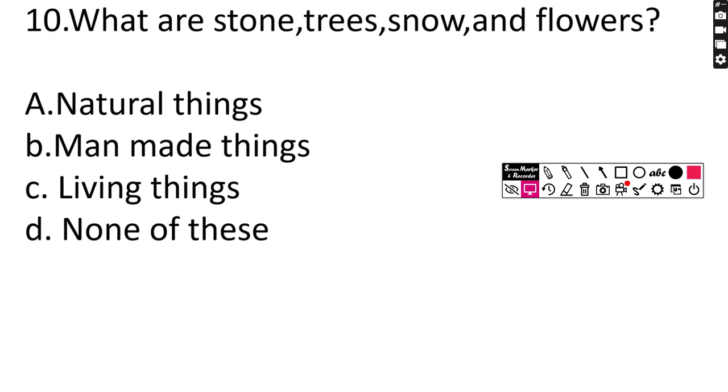Number 10. What are stone, tree, snow and flowers? A. Natural things, B. Man made things, C. Living things, D. None of these. Correct answer is option A, Natural things. Stone, tree, snow and flowers are natural things.